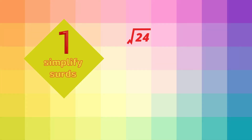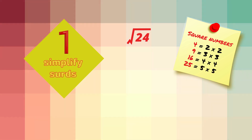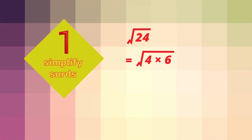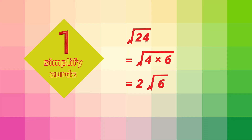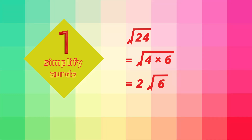The first example is to simplify the square root of 24. First, find the factors of 24 where one of the factors is a square number, like 4 or 9 or 25. Well, 24 is 4 times 6. So the square root of 24 equals the square root of 4 times 6, all inside the square root symbol. Now the square root of 4 is the exact number 2, so we can take that outside of the square root sign and put it in front. But the square root of 6 is not exact, and we leave that as a surd. So root 24 is 2 root 6.